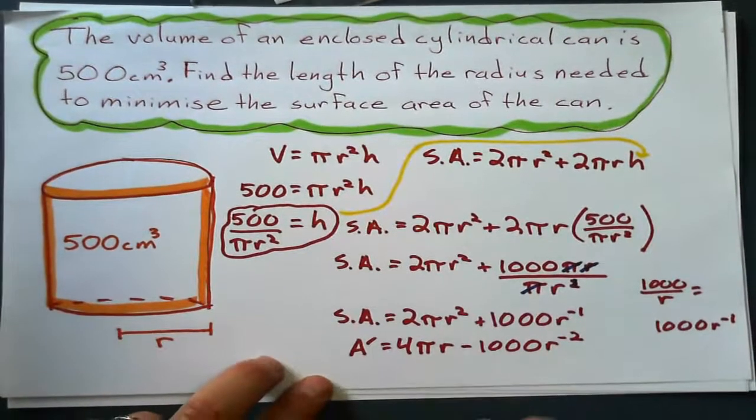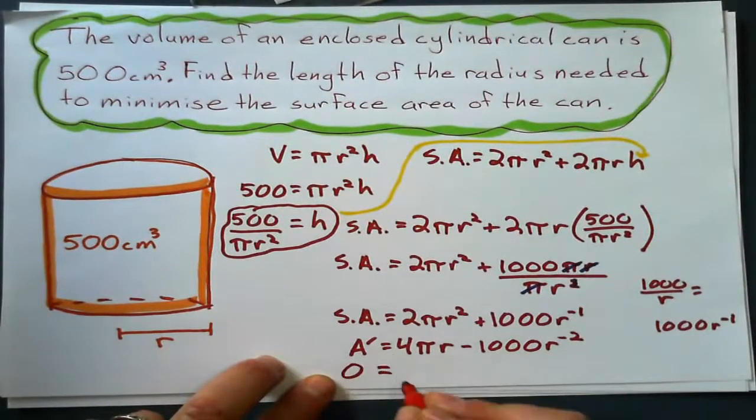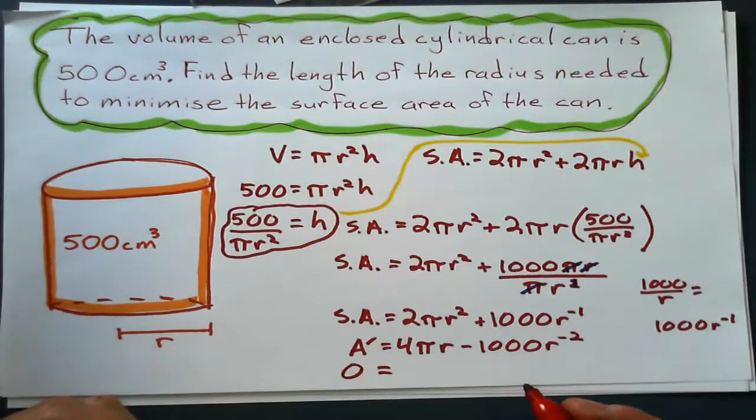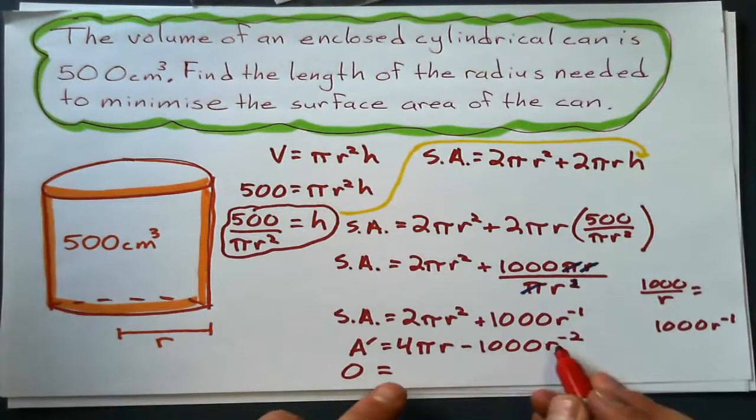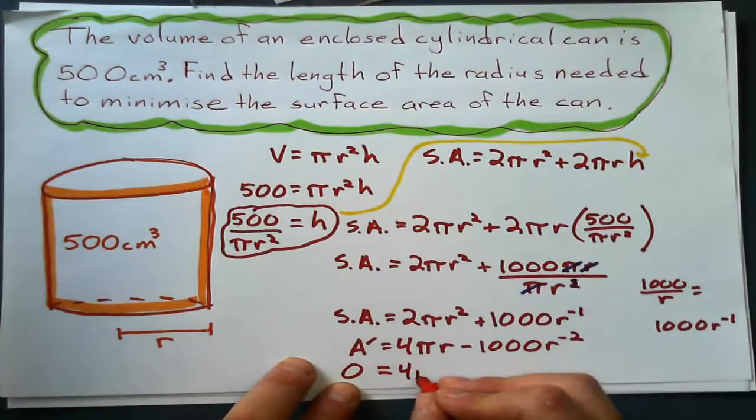After I differentiate it, of course, I set it equal to 0, because at the minimum, the gradient is equal to 0. So, I've got the gradient function, set it equal to 0.